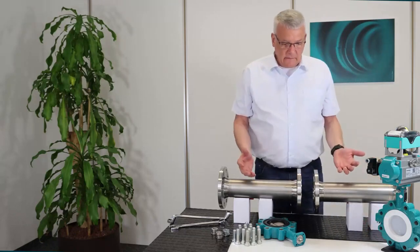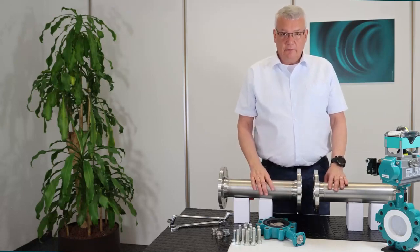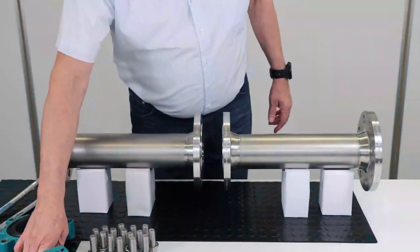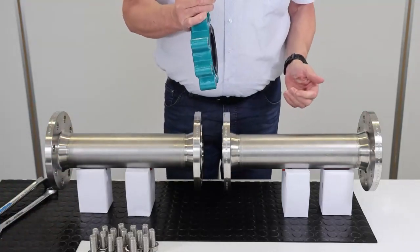These were the basics, and now we will start installing the lug valve between the flanges. Now install the lug body type between flanges.